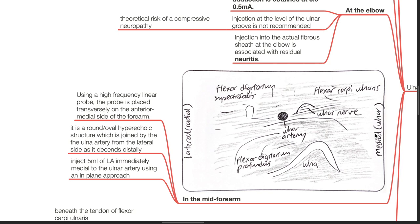At the mid-forearm level, using a high frequency linear probe, the probe is placed transversely on the anterior medial aspect of the forearm. It is a round oval hyperechoic structure which is joined by the ulnar artery from the lateral side as it descends distally. Inject 5 mL of local anesthetic immediately medial to the ulnar artery to block the ulnar nerve using an in-plane approach.